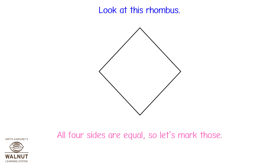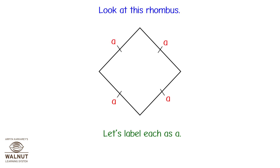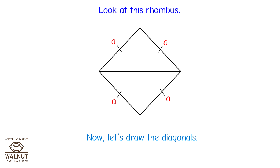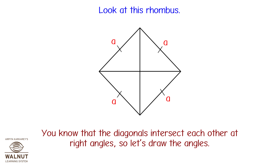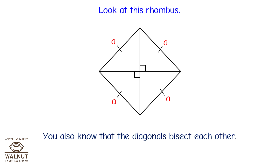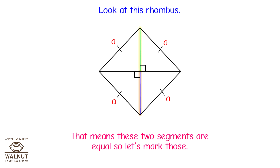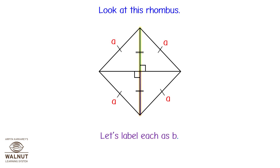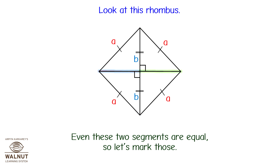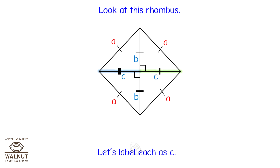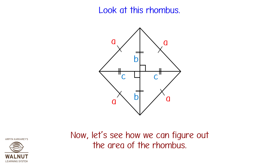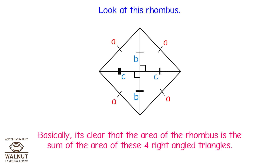Look at this rhombus. All four sides are equal, so let's mark those and label each as A. Now let's draw the diagonals. You know that the diagonals intersect each other at right angles. You also know that the diagonals bisect each other — so these two segments are equal, labeled B, and these two segments are equal, labeled C. Now let's see how we can figure out the area of the rhombus. The area of the rhombus is the sum of the areas of these four right-angled triangles.